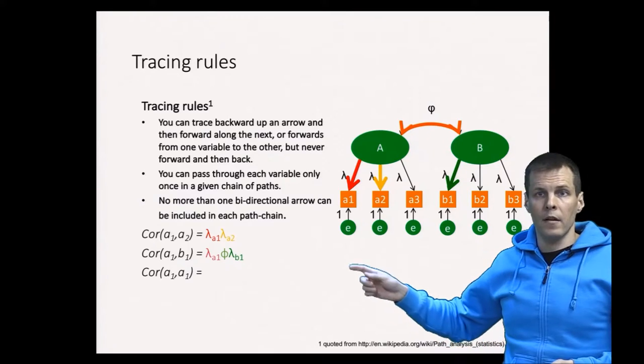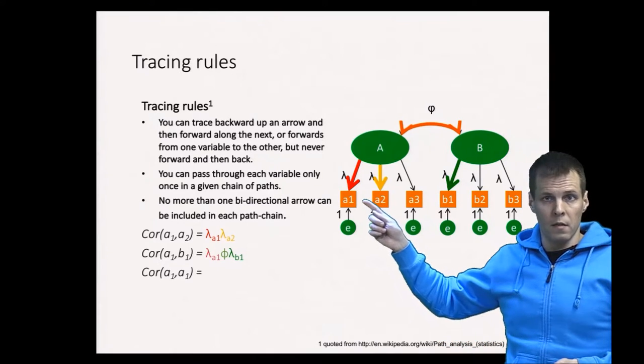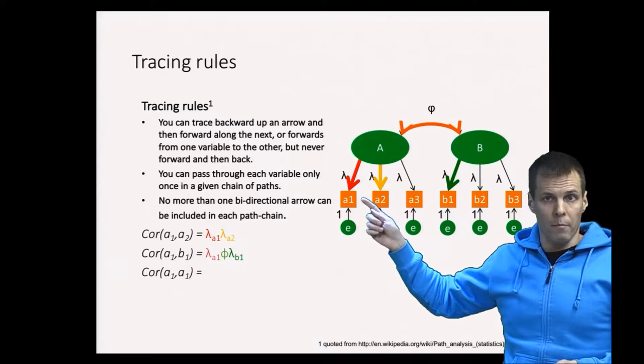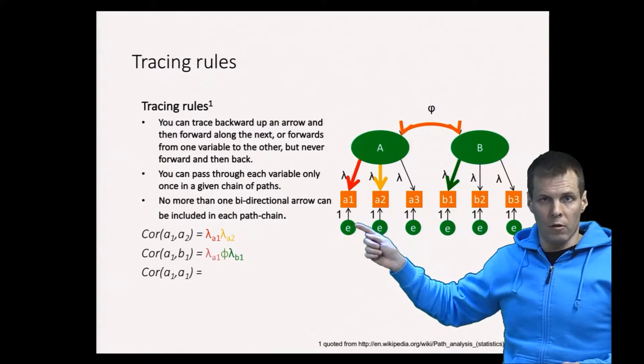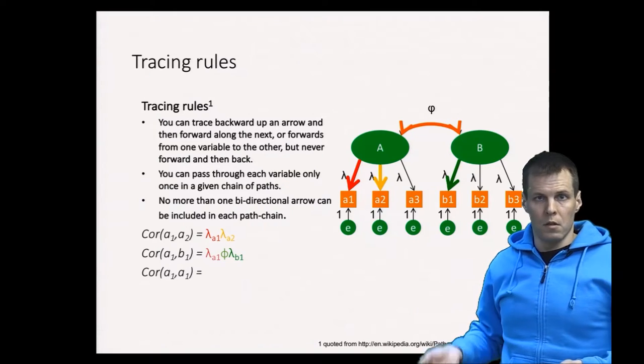The variance of a1—we have two different ways to go somewhere and come back. We can go to factor A and come back, and we can go to the error term E and come back. That's the variance of a1.